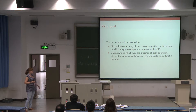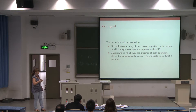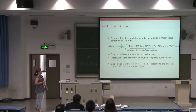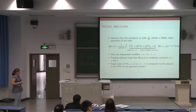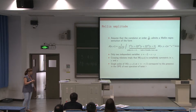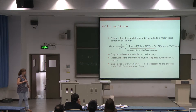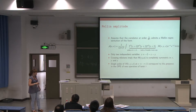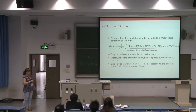The rest of the talk is devoted to studying solutions in the regime where single-trace operators appear in the OPE, and seeing how their presence affects the anomalous dimension of double-trace twist-4 operators. I will introduce the Mellin amplitude. In this representation, we can write the correlator at order 1/N² in terms of gamma functions of s+2, t+2, u+2 — this is called the Mellin amplitude. There is a relation between z and x and y, since we only have two independent variables. The gamma functions have poles, and the position of the poles equals the twist of the double-trace operators.